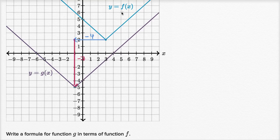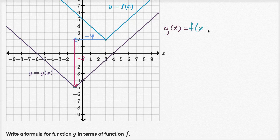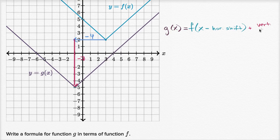So how do you express g of x if it's a version of f of x that's shifted to the left by four and shifted down by seven? Or you could say it had a negative four horizontal shift and a negative seven vertical shift. Well, g of x is going to be equal to f of x minus your horizontal shift, plus your vertical shift. Our horizontal shift is negative four, and our vertical shift is negative seven.